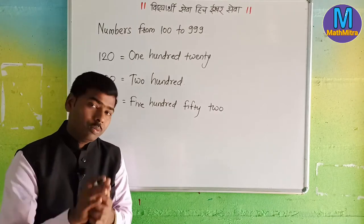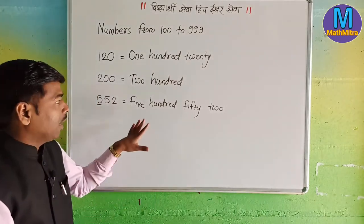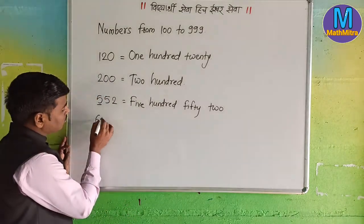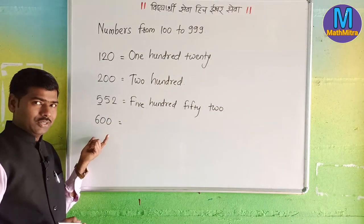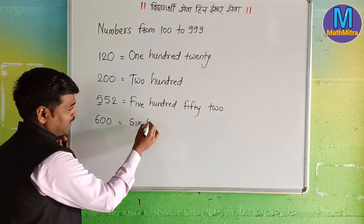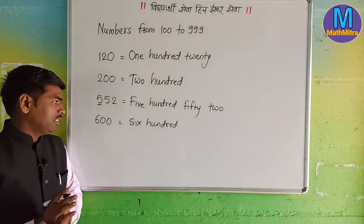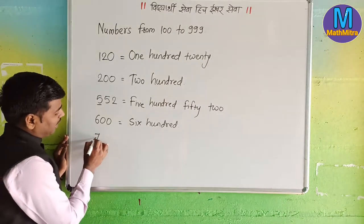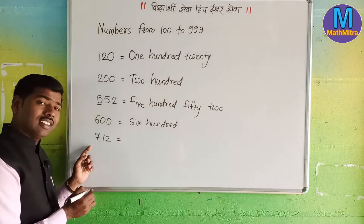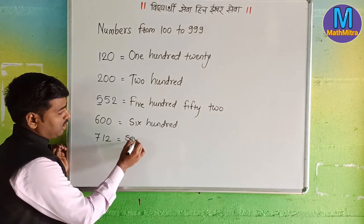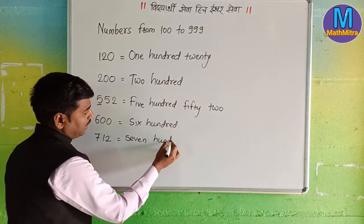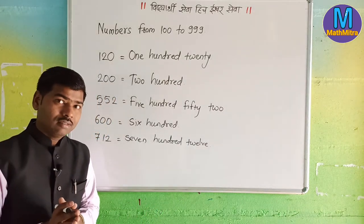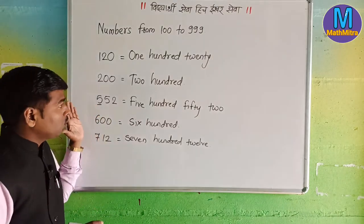552. You can write in number. Now we will get a revision. First of all we will get a number. This is how you can write in number: 600. Six hundred. This is ones, tens, hundreds — seven hundred twelve. We are only revising these numbers.